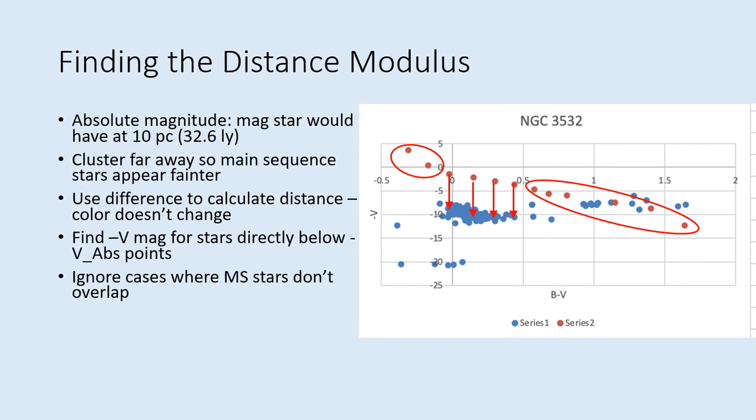Once you've found minus V, calculate V minus V abs and put your answer in table 3. This is known as the distance modulus and it's the key number in figuring out the distance to the cluster. Remember that the diagram has everything multiplied by minus 1. So if you're getting a negative number for the difference, just multiply by minus 1 again. Once you have a set of values for V minus V abs, the distance modulus, calculate the average of these and put that at the bottom of table 3.